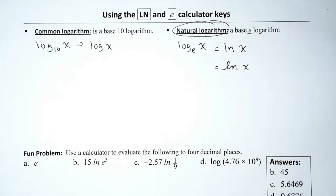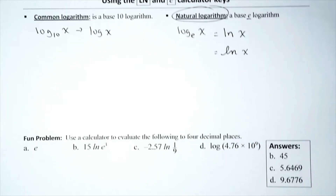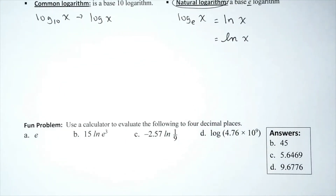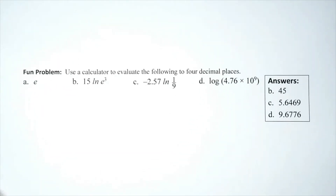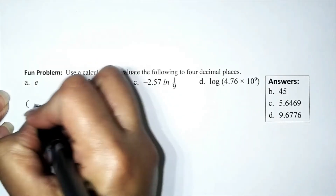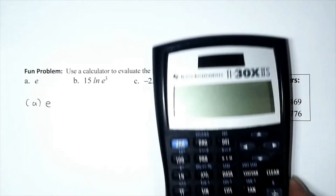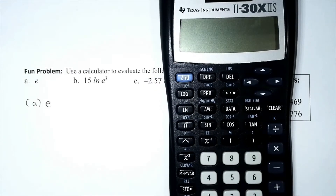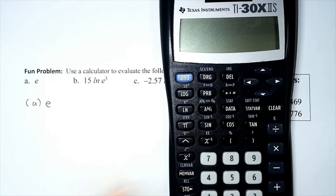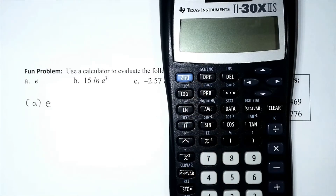We're going to focus on using the calculator. The directions say: use the calculator to evaluate the following to four decimal places. Problem A: what does e evaluate to, to four decimal places? Let me find the e key. On the calculator, there are main keys and what I call 'behind keys' — the behind keys match the color of the second function indicator.